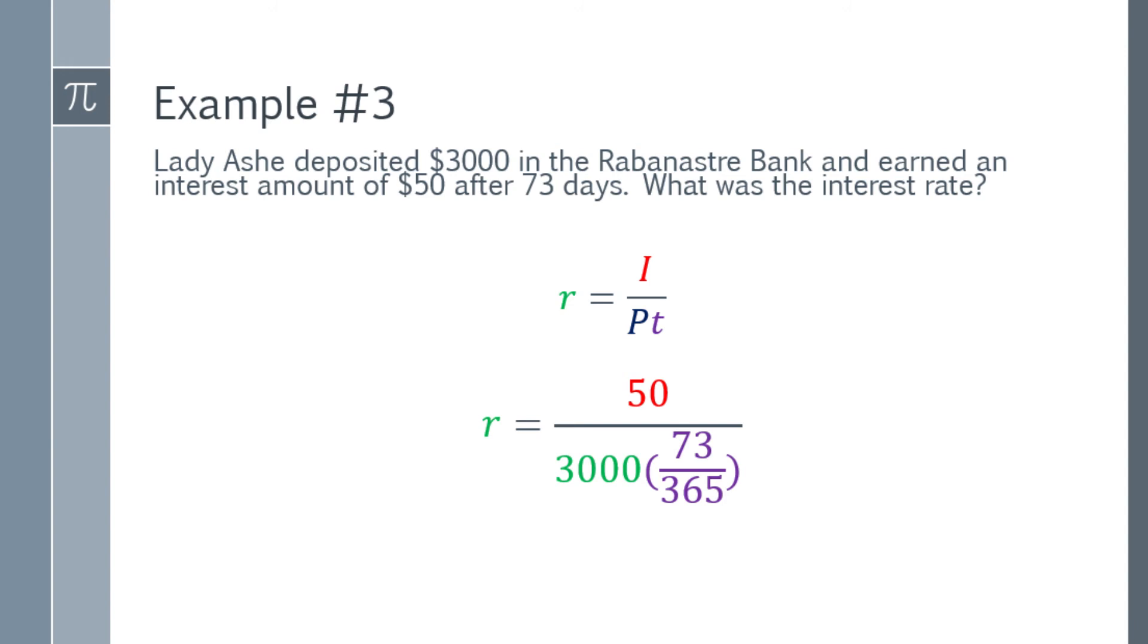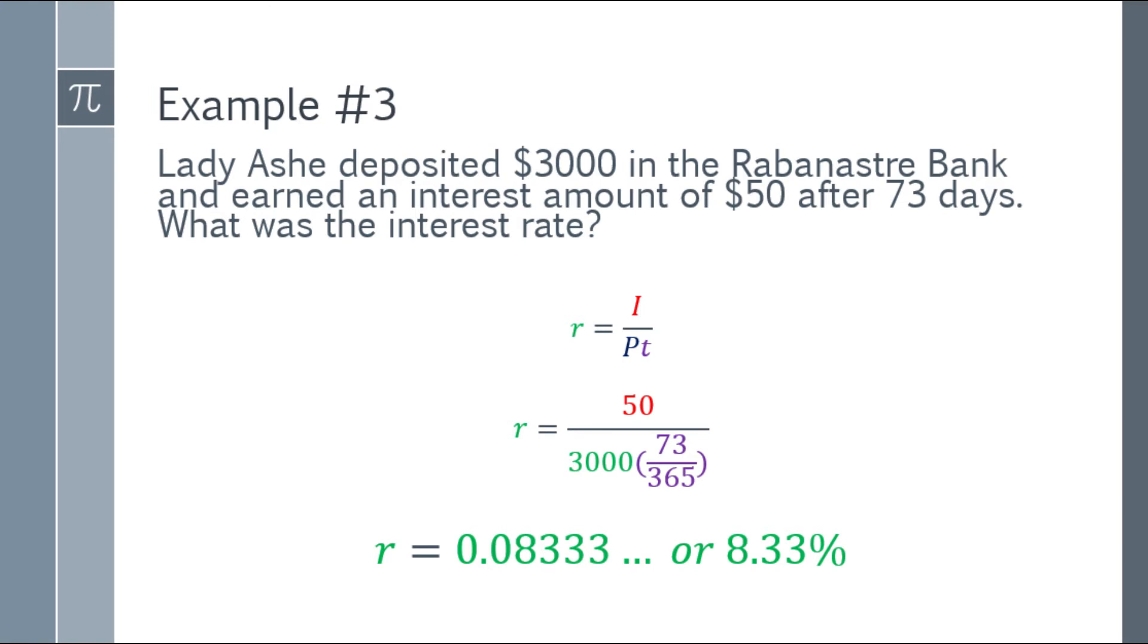So algebraically, the answer will be 0.083, repeating decimal na yung sumay 3. Multiply it by 100, we have 8.33%. Sa tanong na Lady Ash deposited $3,000 in the Rabinaster bank and earned an interest amount of $50 after 73 days, ang interest rate na yun ay 8.33%.